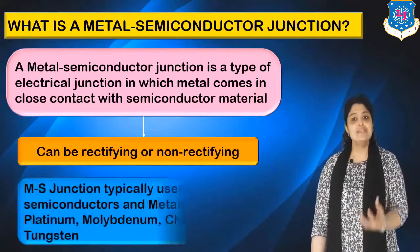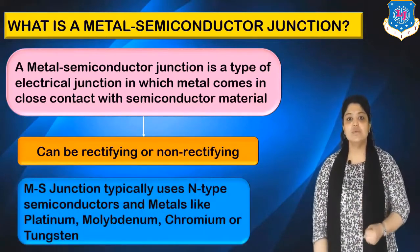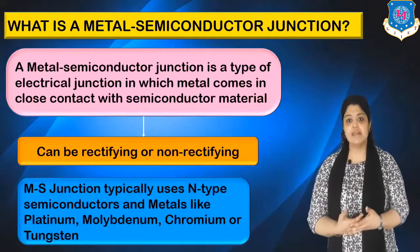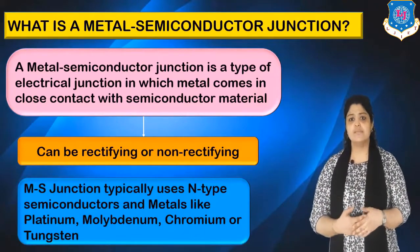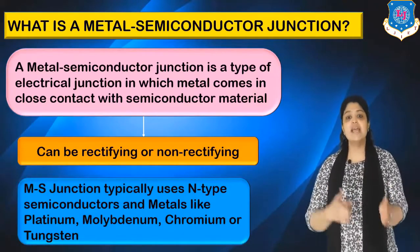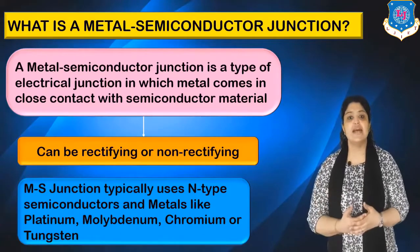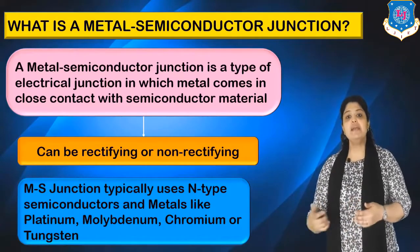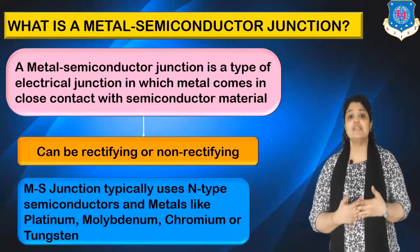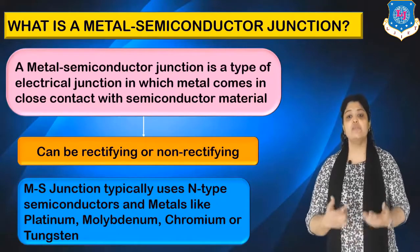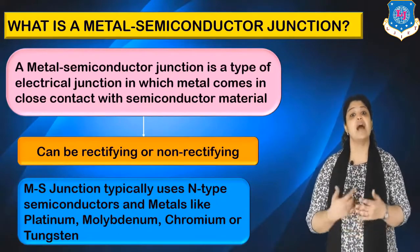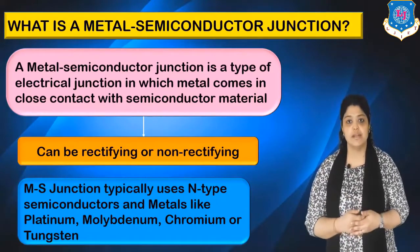Talking about the semiconductors used here, we use particularly n-type semiconductors, because n-type already has electrons as majority carriers. The common metals used in MS junctions are platinum, molybdenum, chromium, and tungsten — all of them having high conductivity.